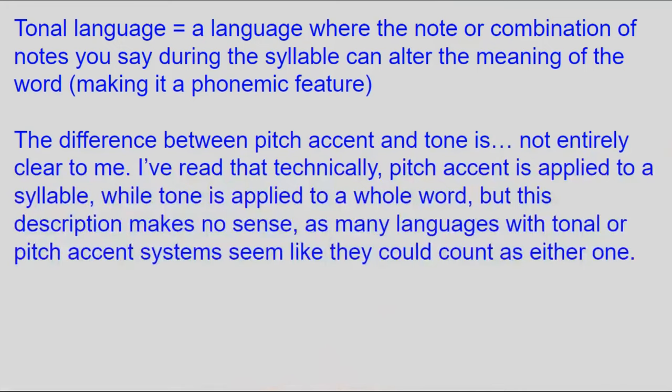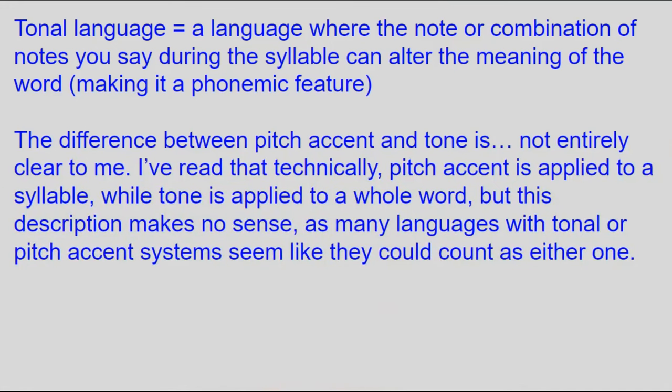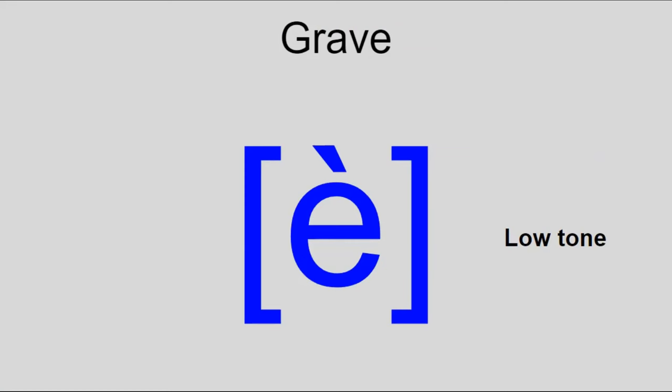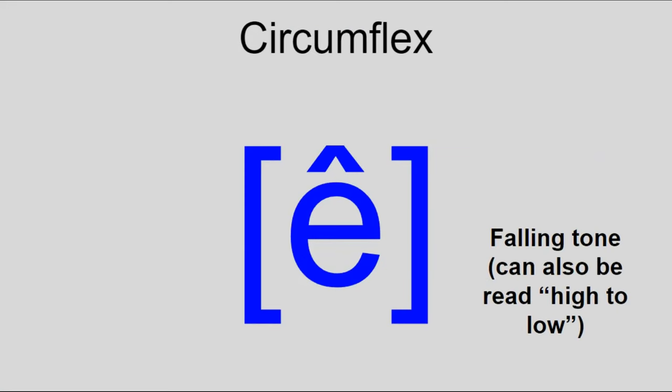Now about pitch and tone. There are two ways pitch and tone can be expressed in IPA. First is with a diacritic: acute for high, grave for low, caron for rising (literally low to high), and circumflex for falling (literally high to low).